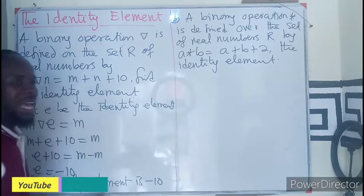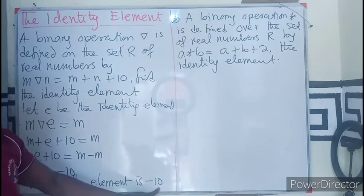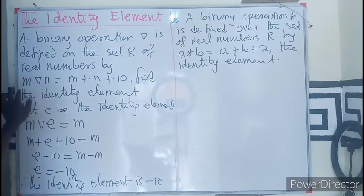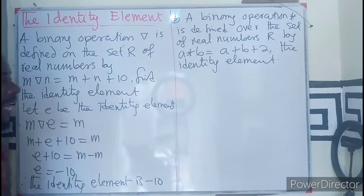Therefore, the identity element under the operator star is just negative 10. It means that if I have a negative 10 operated on any number under this definition, I will still get the number. That is the identity element.